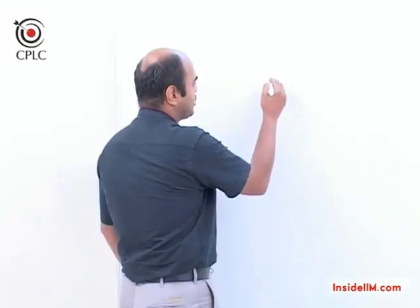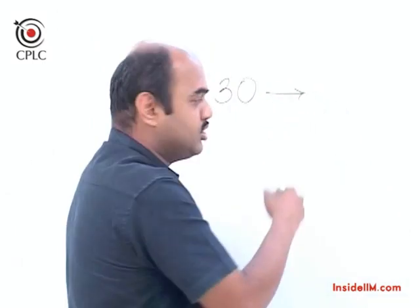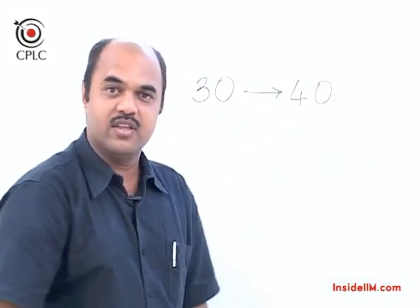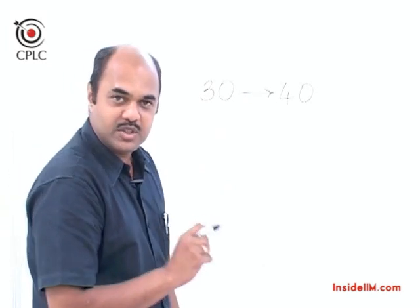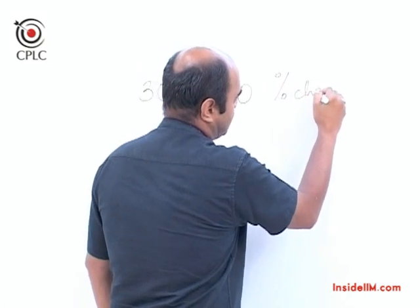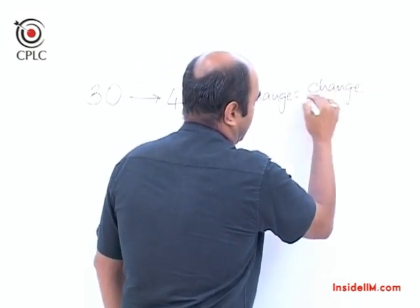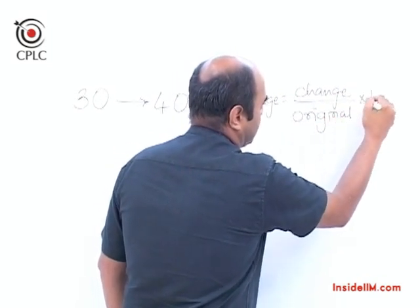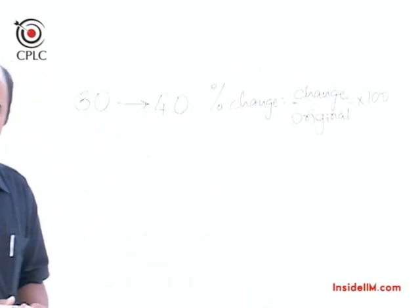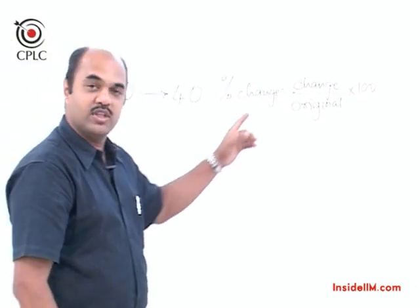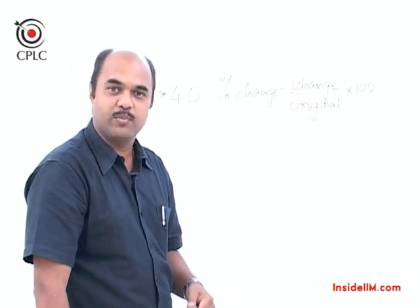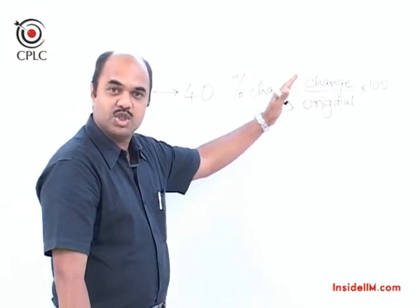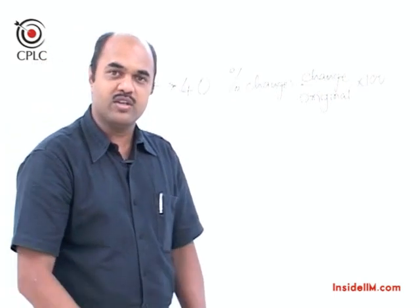We will now move on to the concept of percentage change. Suppose we have a value 30 and it changes to 40 — how much is the percentage change? This can be solved using the formula: percentage change equals change upon the original value multiplied by 100. Here the change is 10 and the original value is 30, so the answer is 10 upon 30 into 100, which is one third as a percentage, giving 33.33 percent.